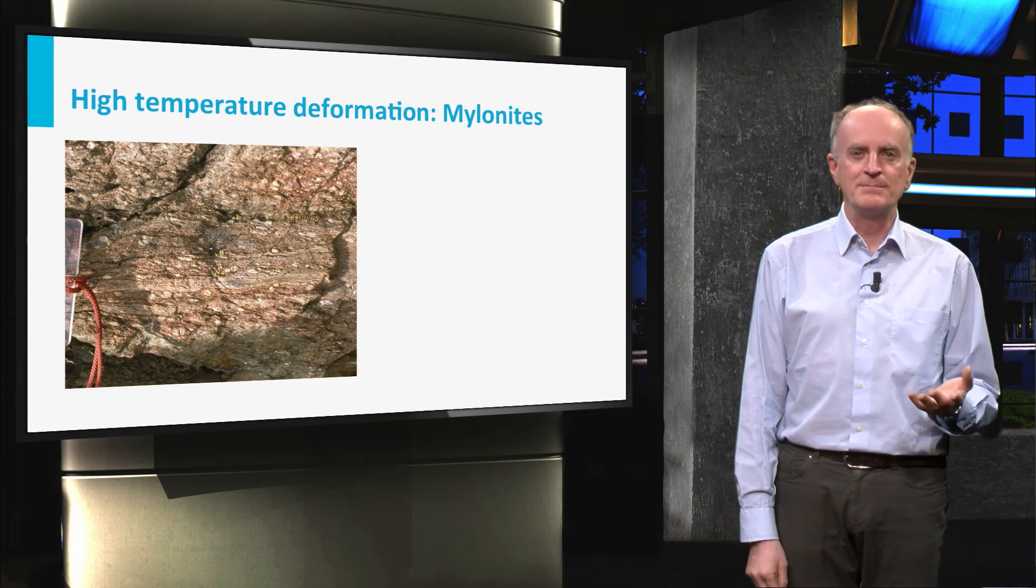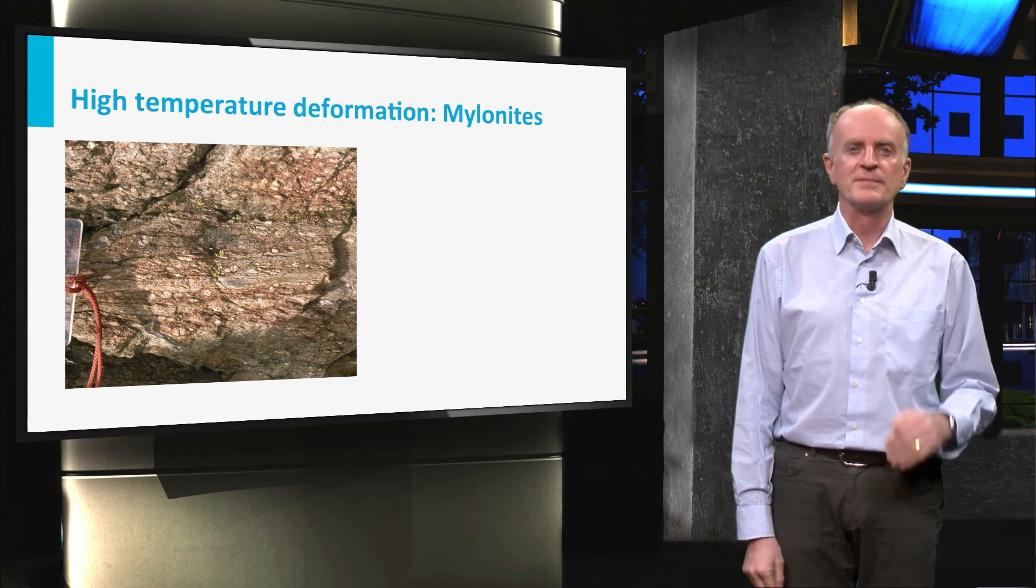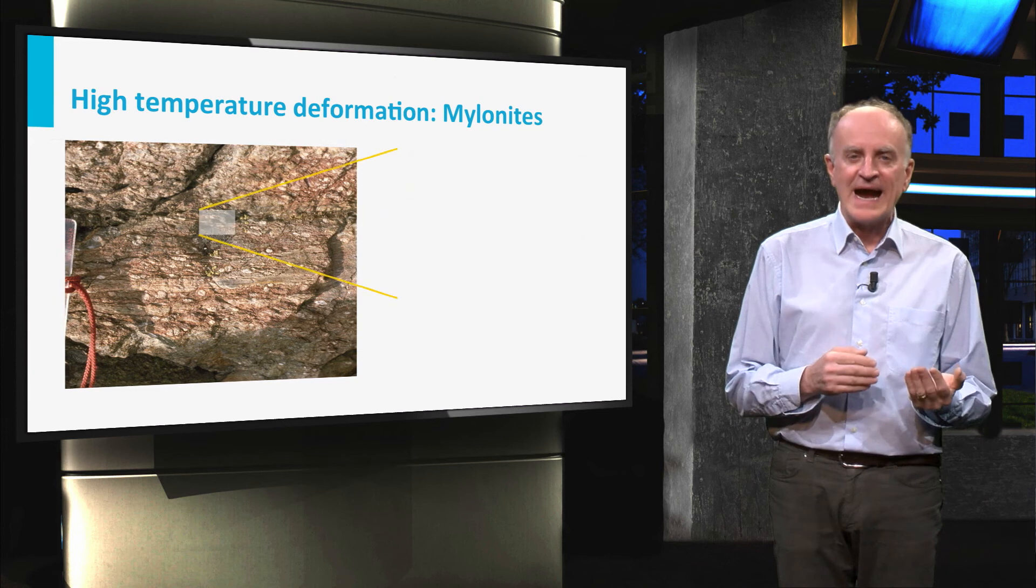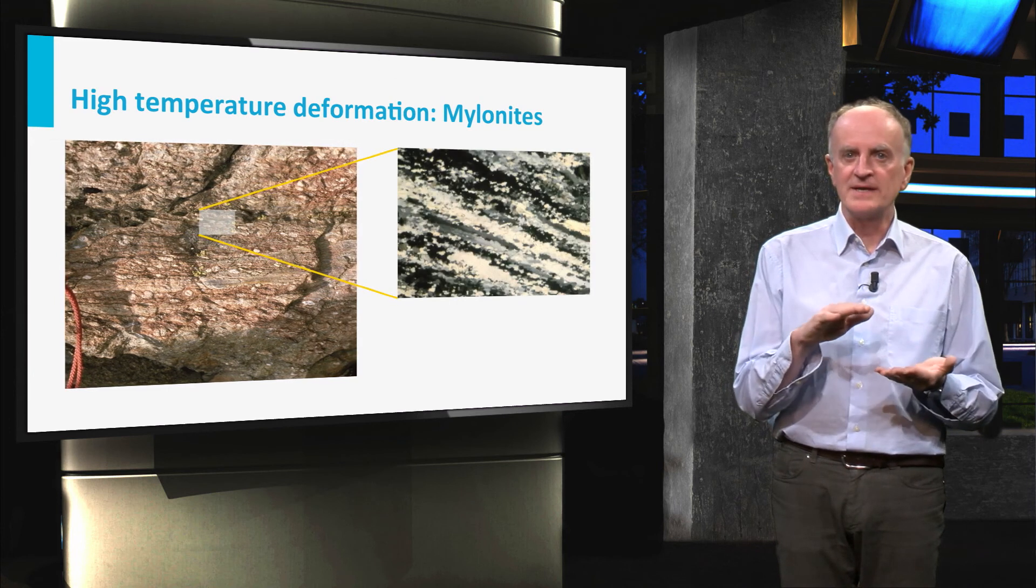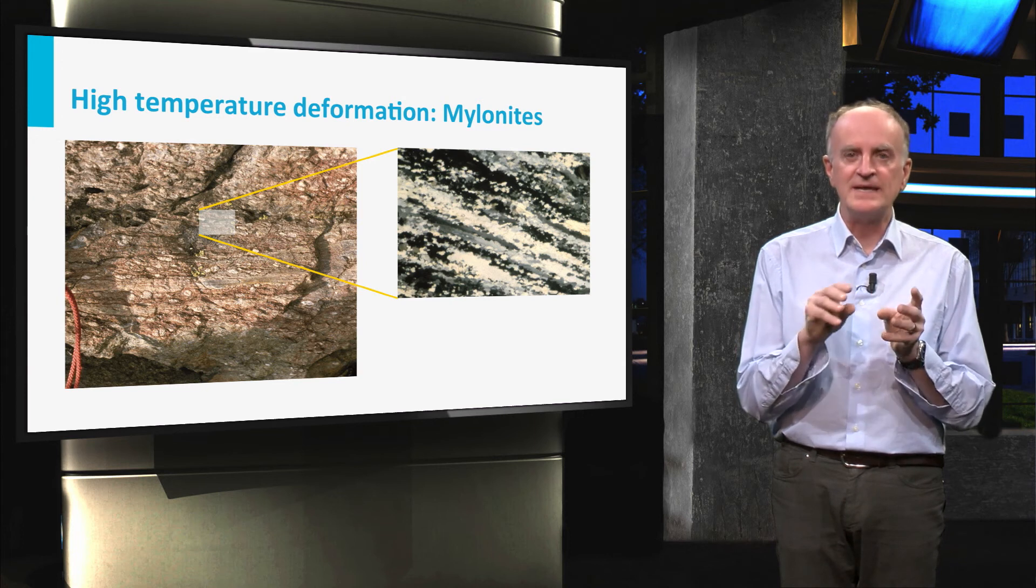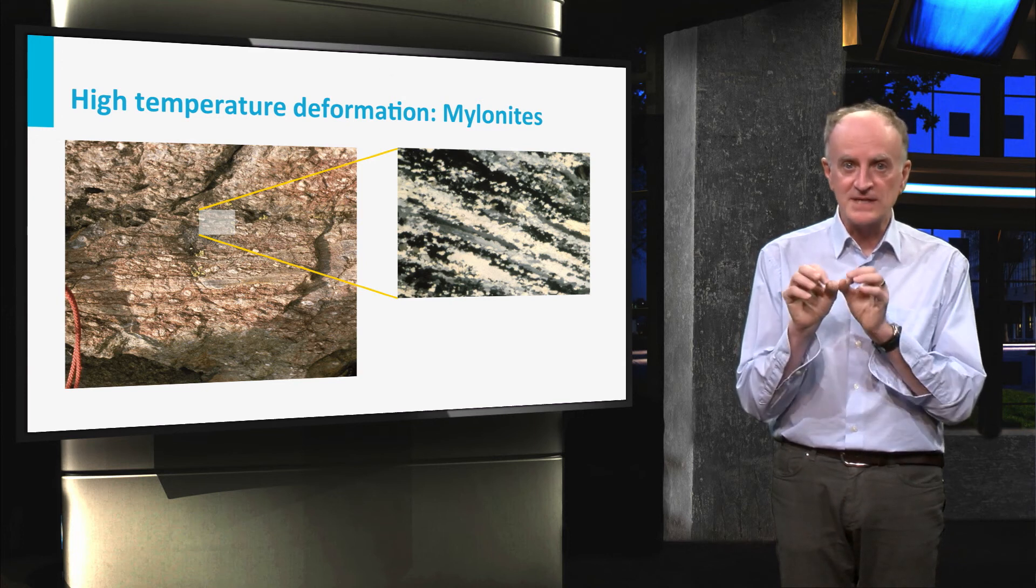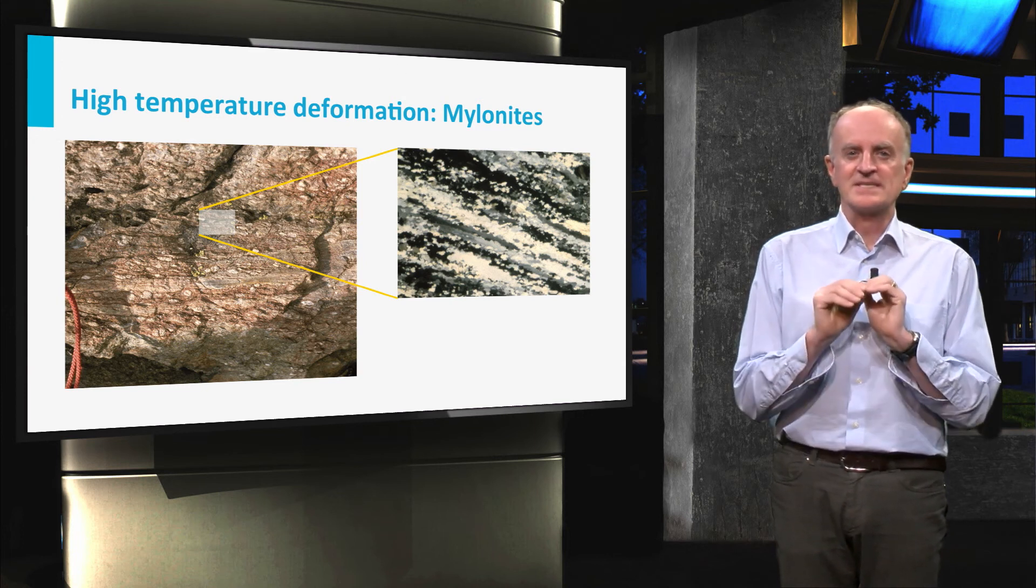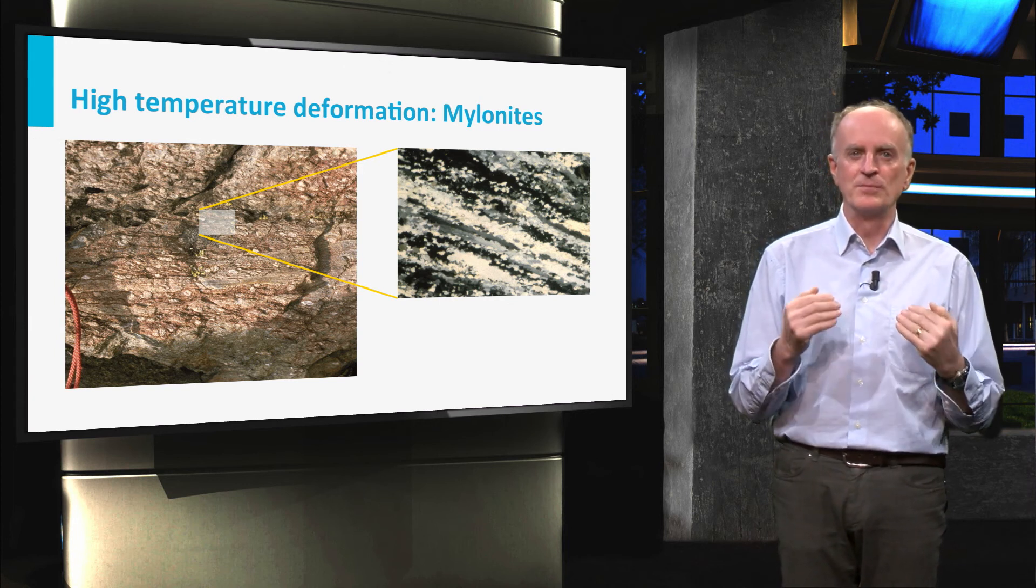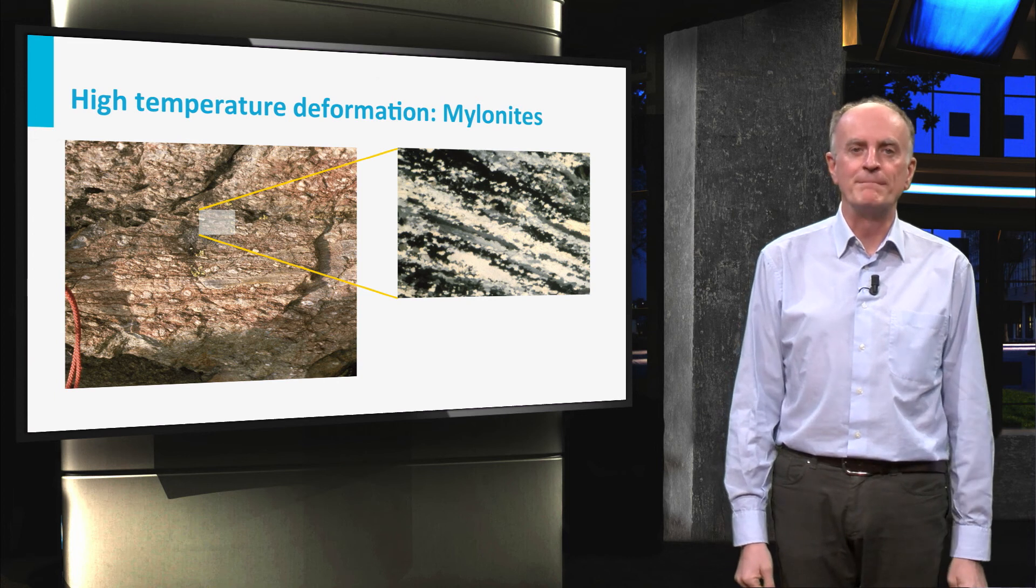Rocks deforming at high temperatures look very different from their lower temperature counterparts. Even when they are highly deformed, they will not break, and the deformations are accommodated by changes in the shape and dimension and structure of the crystals. The sample always preserves continuity. Rocks deformed at high temperatures are often called mylonites.